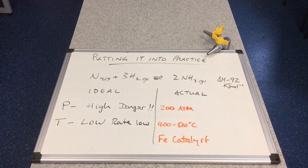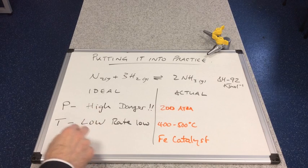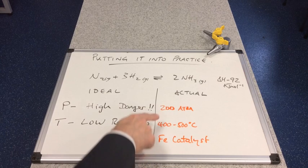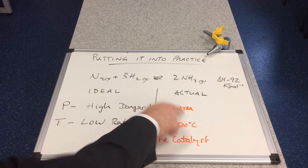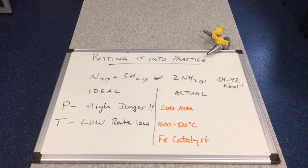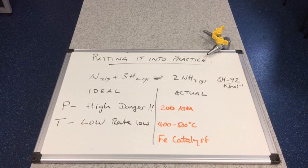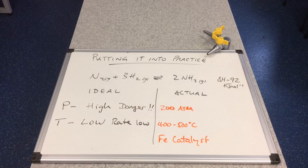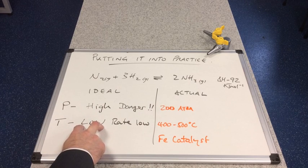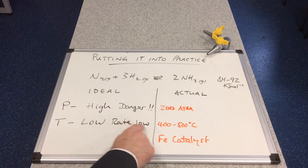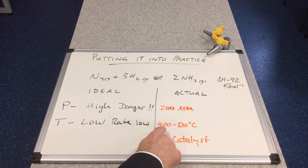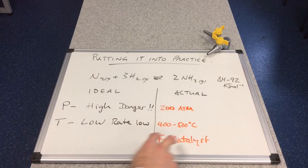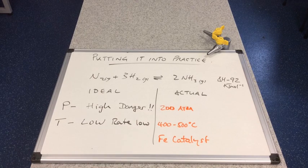So in reality, they don't actually use these conditions. They don't use a high pressure because it's too dangerous, and so they settle on a pressure of 200 atmospheres. So they bring the pressure down to make the process safer. The low temperature isn't favored because it would be too slow, and so they increase the rate of the reaction. Therefore they would use a temperature in between this range, 400 to 500 degrees Celsius.